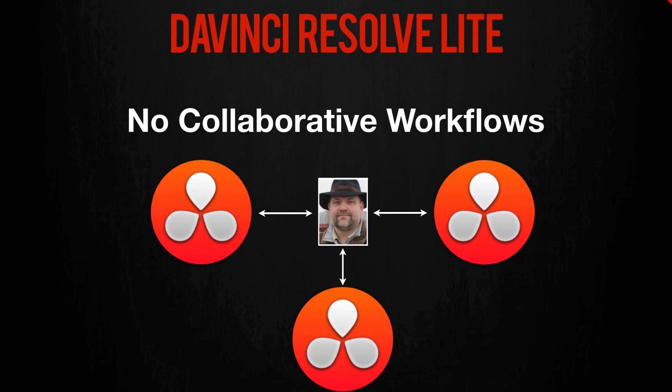Resolve 11 introduced a paradigm-shifting feature called the Collaborative Workspace. It allows multiple seats of Resolve to open the exact same project and work on it simultaneously — an editor editing the timeline, an assistant loading and logging incoming footage, a junior colorist doing initial shot balancing, and the senior colorist designing the look, all simultaneously with the exact same project file open on five different workstations. Not only must you be on the paid version, every seat involved must have a dongle.